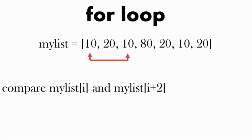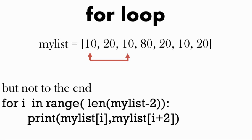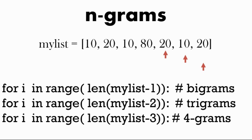Looking at this for loop, we compare my list at position i with my list at position i plus two, giving us pairs: 10 and 10, 20 and 80, 10 and 20, 80 and 10, and 20 and 20. In the for loop we use a range from the length of the list minus two, so we don't get an out-of-range error. With a trigram it's minus two, with a bigram it's minus one, and with a four-gram it's minus three — we stop just before we'd get an out-of-range error for the n-grams.